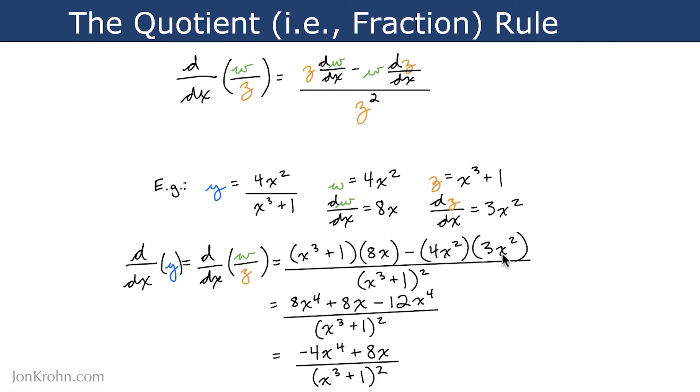So 4x squared times 3x squared gives us 12x to the power of 4, which we're of course subtracting from the earlier part. And that's about as simple as it gets.